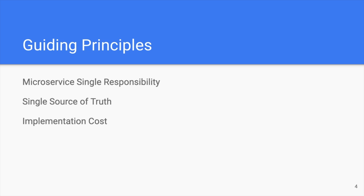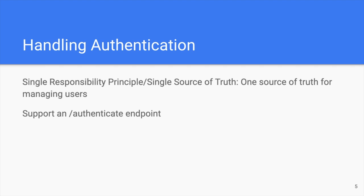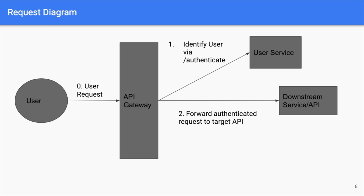First things first, let's talk about handling authentication. The single responsibility principle and the single source of truth dictate that we should have one source of truth for managing our users. This implies creating a user management service. This service can support an authenticate endpoint. An example request coming into our system might look as follows: a user makes a request against our API gateway, the gateway queries the user service's authenticate endpoint to validate who the user is, and then the API gateway forwards the authenticated request to our downstream target API.